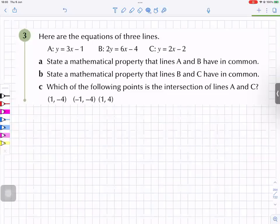For part a, I got the same gradient. Which ones have the same gradient? A and B. So A is y equals 3x minus 1, and for B...